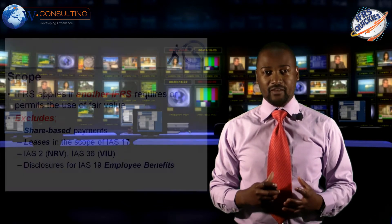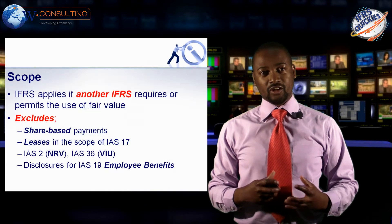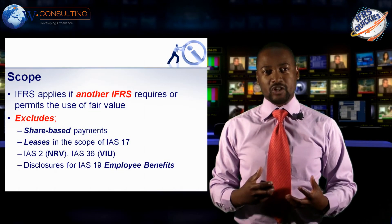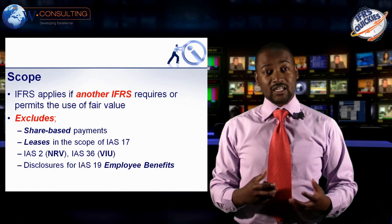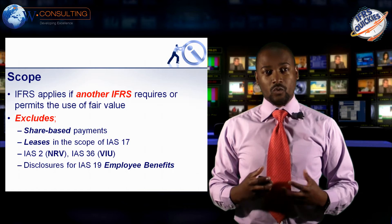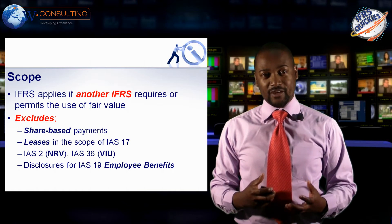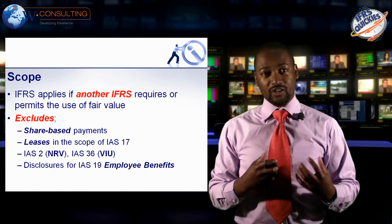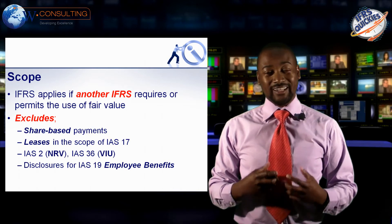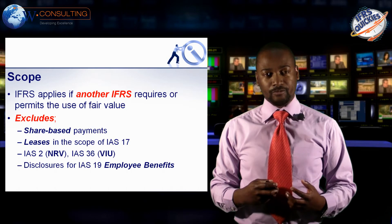Let's look at the scope of the standard — when do you use it, when do you not use it? The standard itself doesn't tell you when to apply fair value; instead, you need to go to the underlying standard. So for example, if you're developing an accounting policy for investment properties, IAS 40 would give you a policy choice between cost or fair value. Once you've elected fair value, then you would go to IFRS 13, and IFRS 13 will give you the detailed guidance on how to apply fair value.